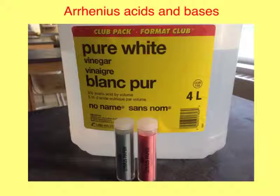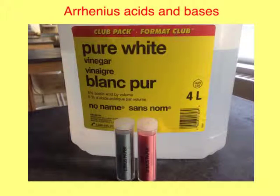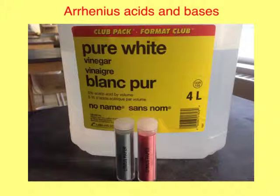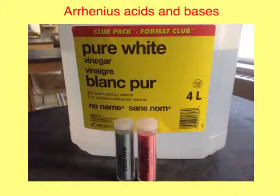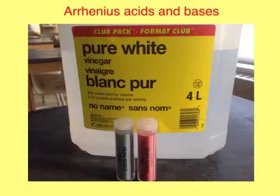Welcome to Monochemistry. Today we're going to look at Arrhenius Acids and Bases, which is the first, most simplistic definition of acids and bases. It was developed by a chemist named Arrhenius, hence the name Arrhenius Acids and Bases. What you're looking at here is a picture of vinegar, which is, of course, an acid.